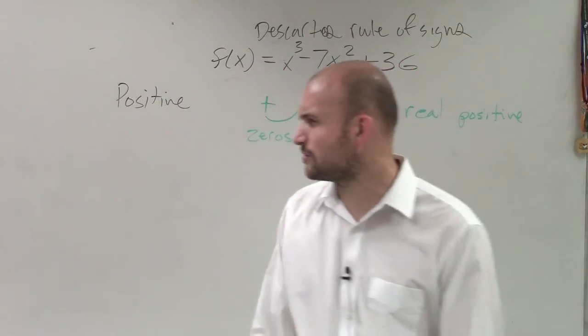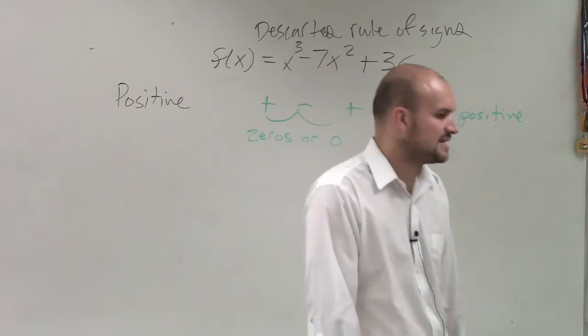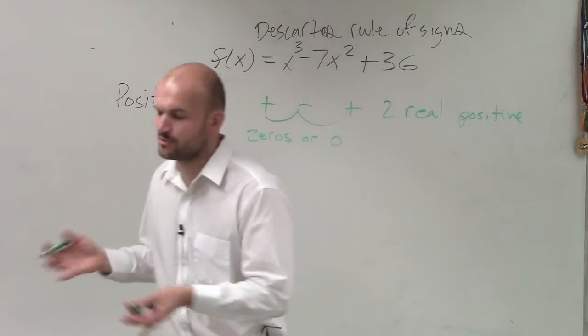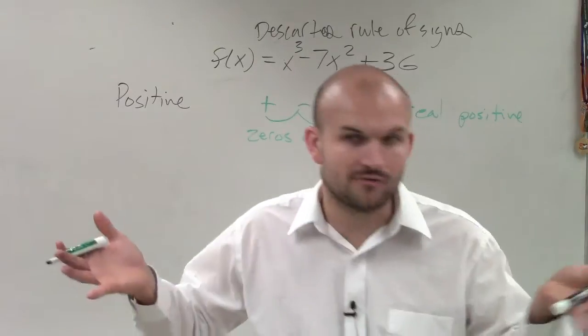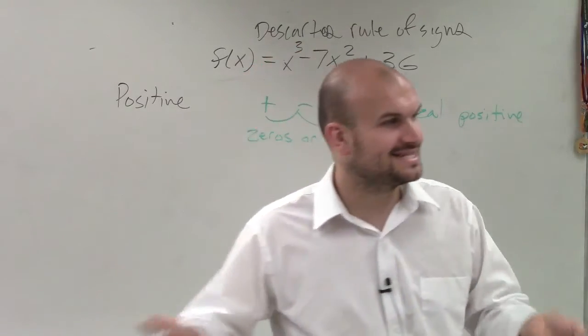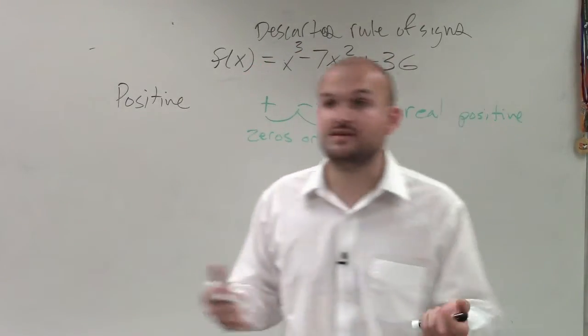Now you say, or zero? Why do you have or zero? Descartes' rule of signs, what it states is the number of times that your polynomial alternates between signs. That's the number of real zeros minus an even number. So an even number is 2, 4 is an even number, right?